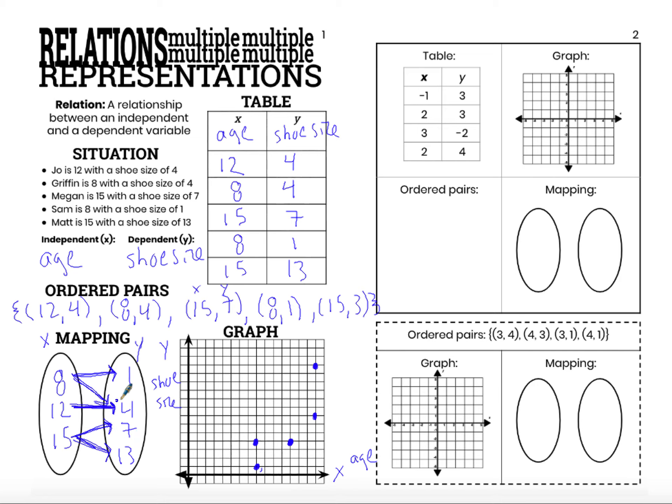So even though I only have 3 values of x and 4 values of y, I know that my relation contains 5 pairings of independent and dependent because I have 5 arrows.